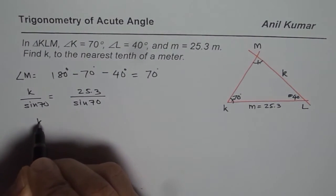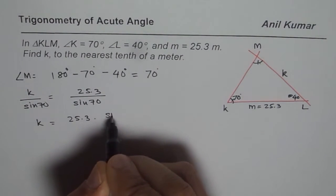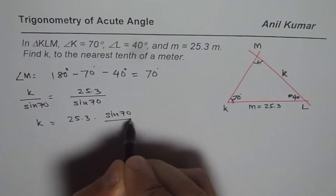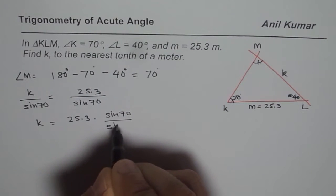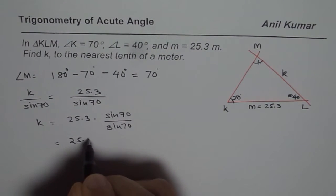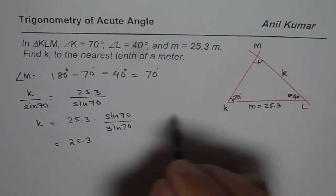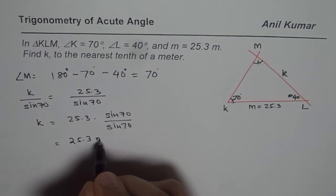And when you solve, you get K equals 25.3 times sine of 70 degrees divided by sine of 70 degrees. And as expected, it's an isosceles triangle, so you get the same dimensions. That is the answer.